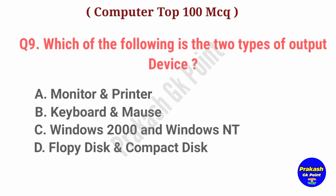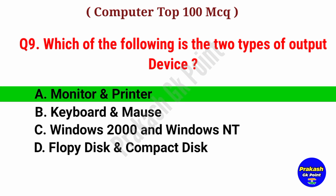Which of the following is the two types of output device? Answer: Option A, Monitor and Printer.